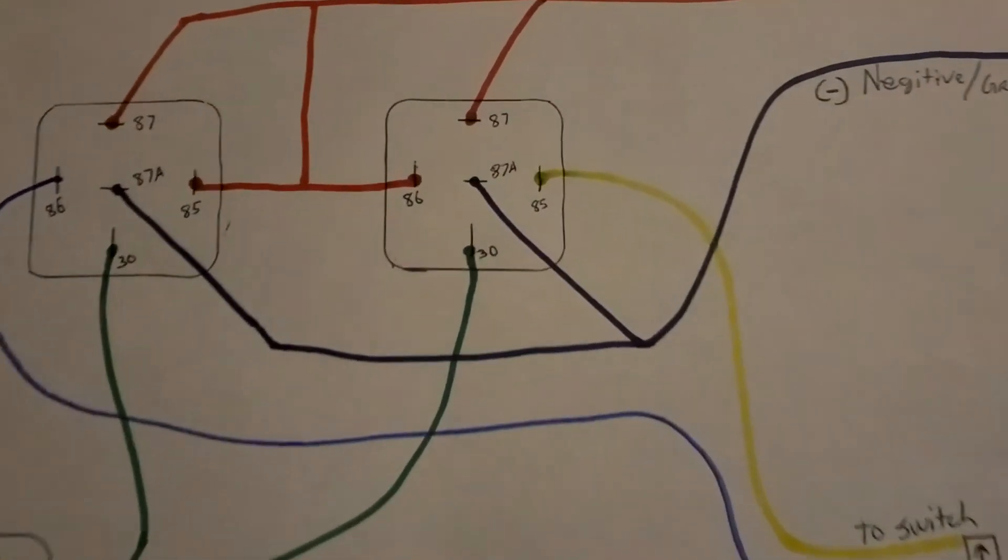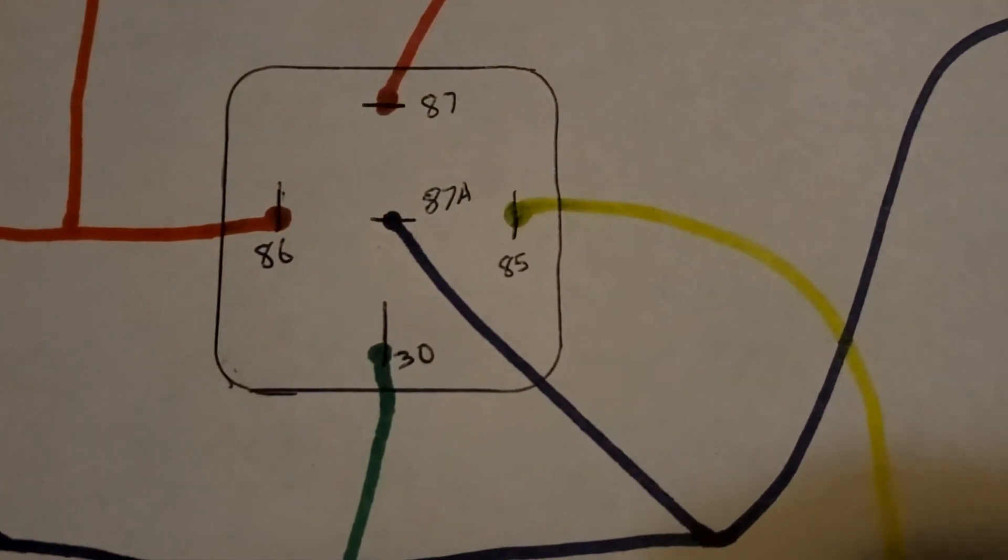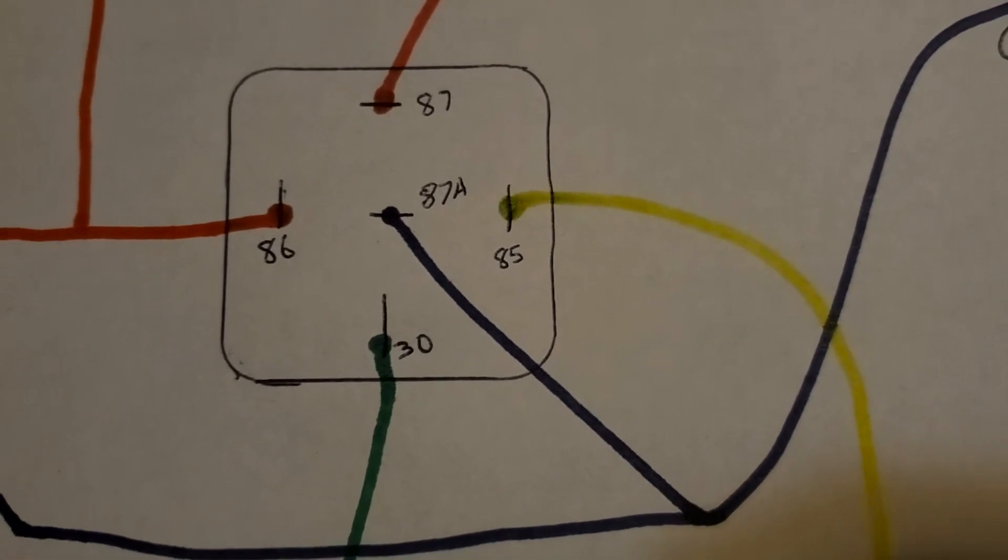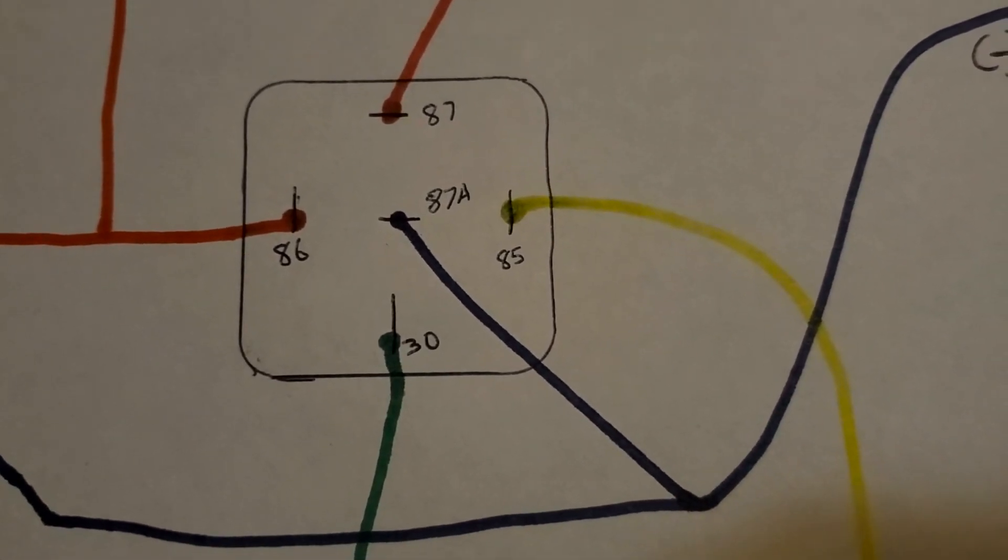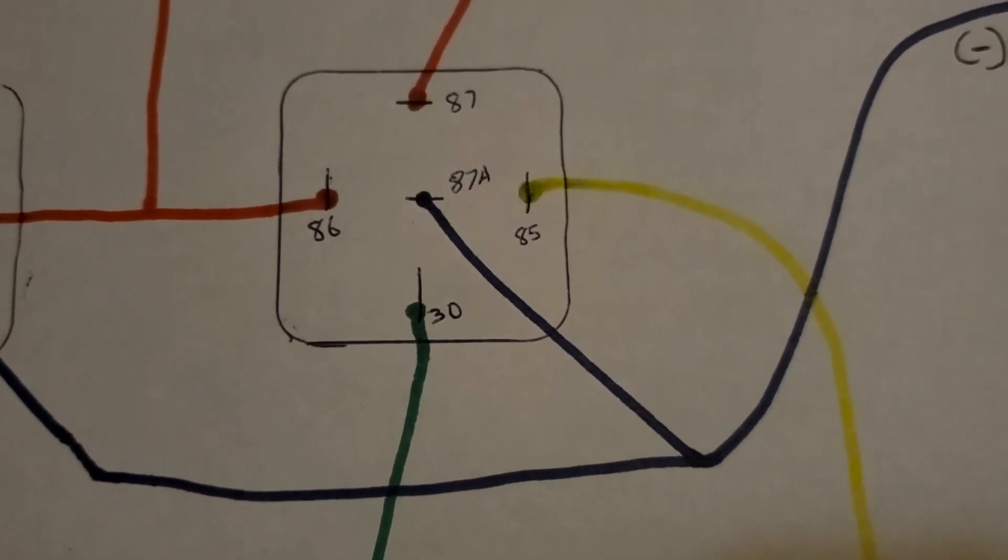You have a set number of pins there. This is a five-pin relay setup: 87, 87A, 86, 30, and 85.